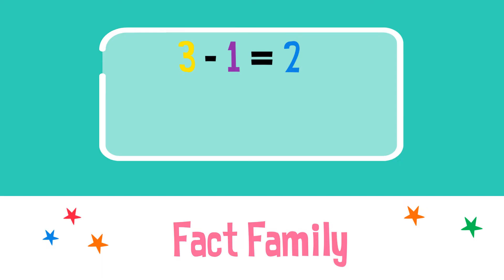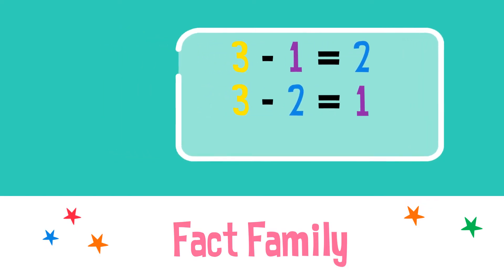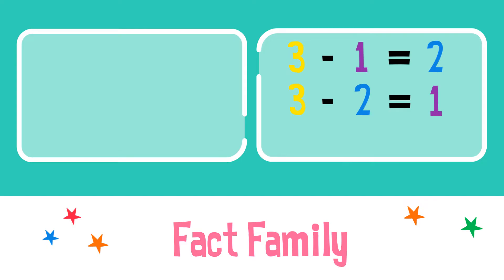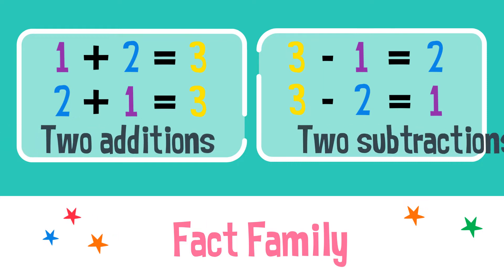In this equation we can swap one and two and still get the correct subtraction statement. This fact family can also form two addition statements by adding one to two or two to one. And with that, the numbers one, two, and three create two addition and two subtraction statements.